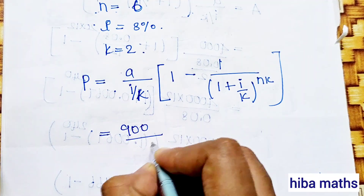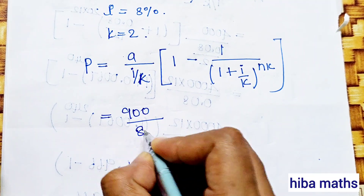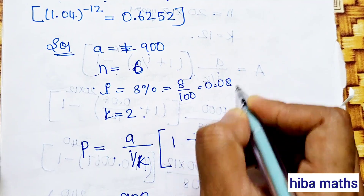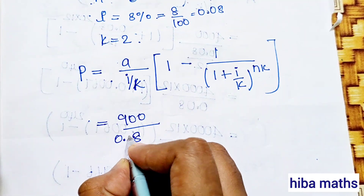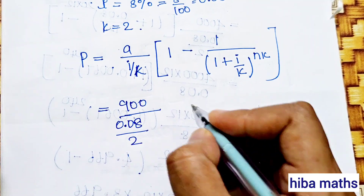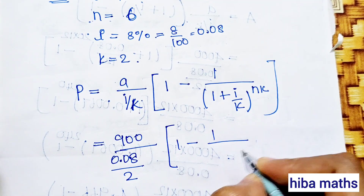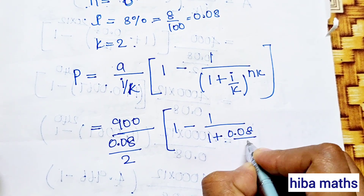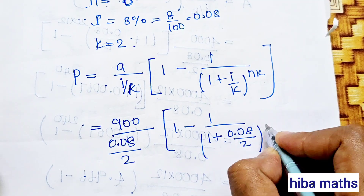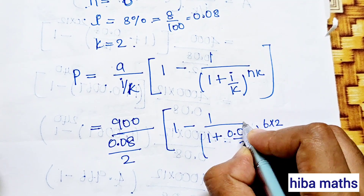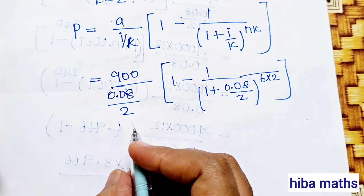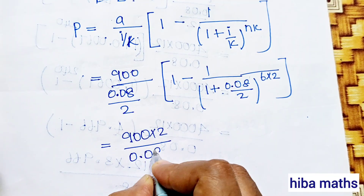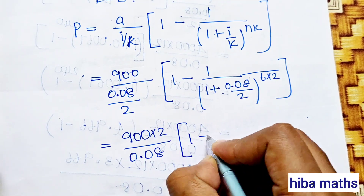Substituting: 900 divided by i value 8%, that is 8 by 100 = 0.08, divided by k value 2, into 1 minus 1 by (1 plus 0.08 divided by 2), with n value 6 and k value 2 in the power, giving 900 into 2 divided by 0.08.